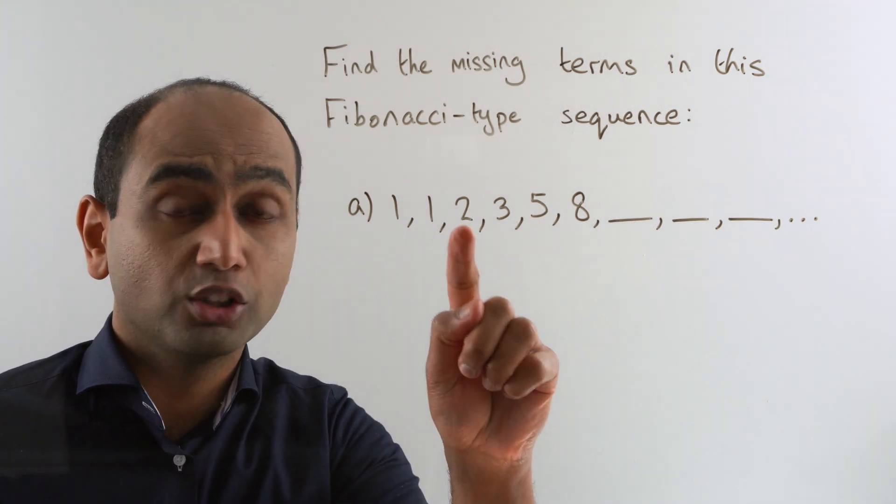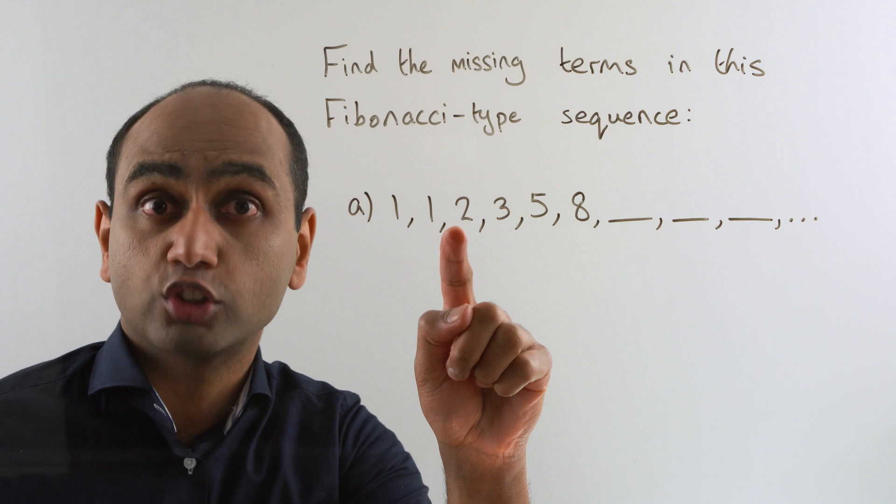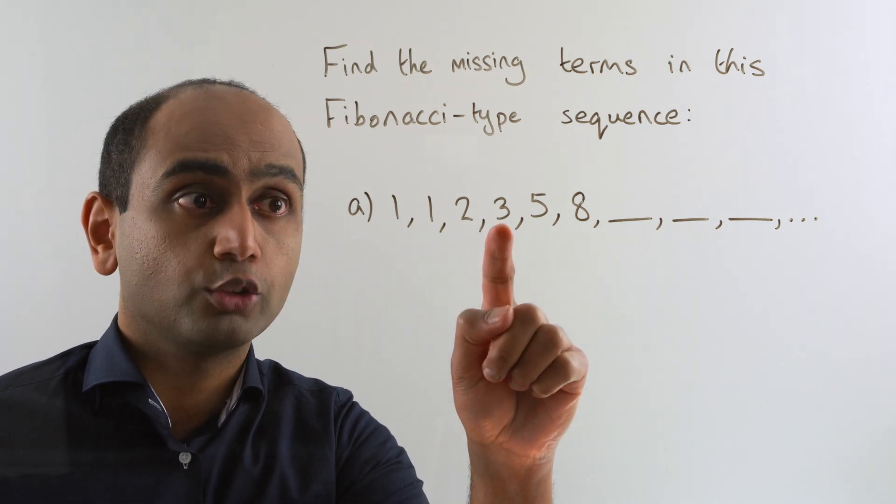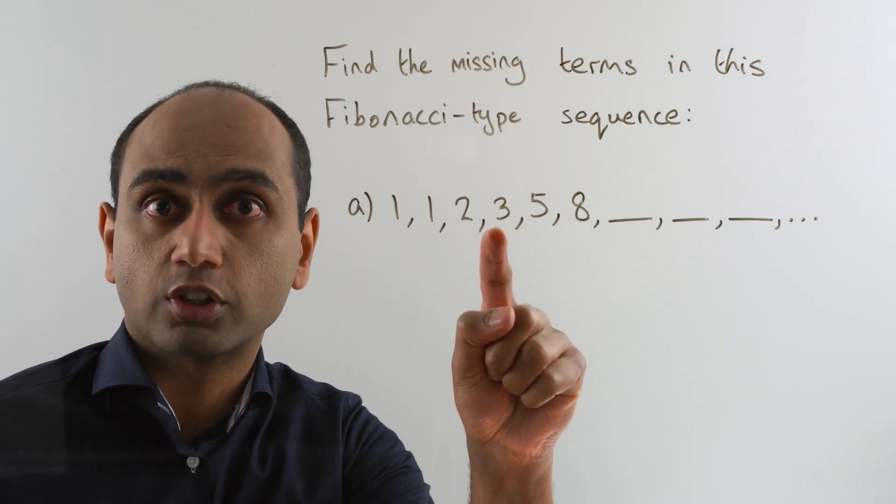So let's have a look at this. That 2 there is what you get when you add these together: 1 plus 1 is 2. To get this 3 we add the two previous terms of the sequence. 1 plus 2 gives us 3.